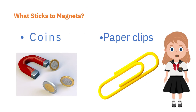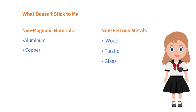Coins, paper clips, and other metallic objects that are magnetic stick to a magnet. Non-ferrous and non-magnetic things do not stick to a magnet, like aluminum, copper, wood, and plastics.